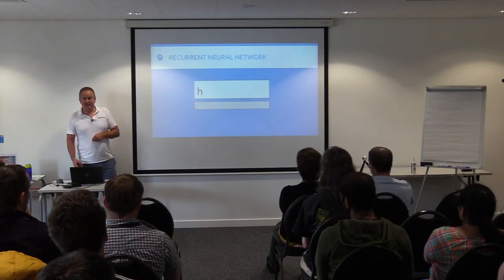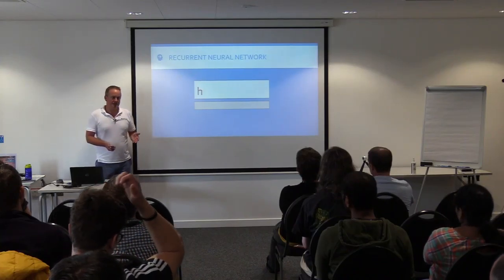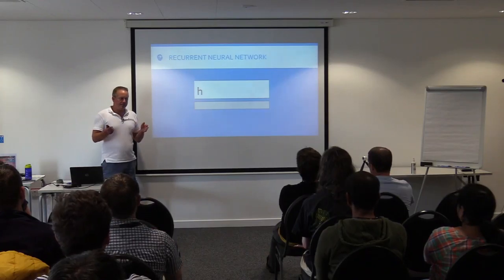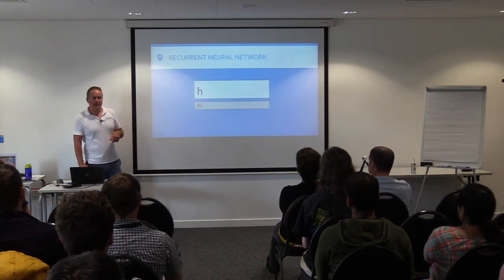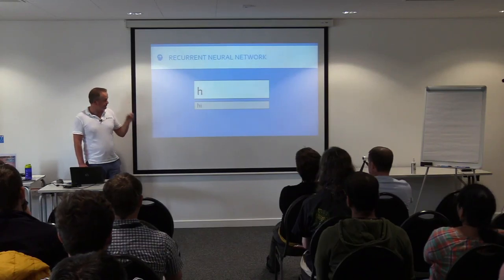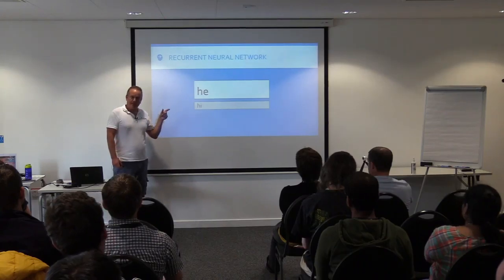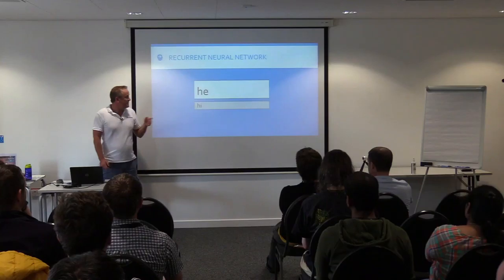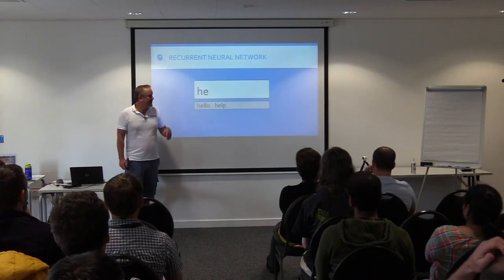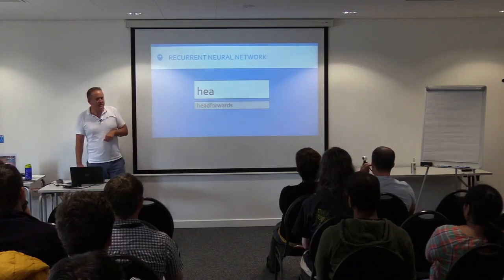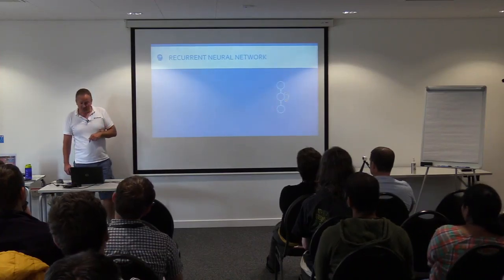You've probably used a recurrent neural network today — they're very often used in phones for predictive text. For example: I type 'H' — the first step looks at instances of 'H' at the start of words and predicts 'hi'. I then type 'e' — looking back at the previous step, it now predicts 'hello' or 'help'. Then I type 'a' and, of course, typing those three letters always leads to 'hea...' — predictable output. Recurrent networks are great for natural language processing, speech recognition, language translation, and conversation modeling.